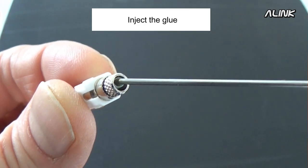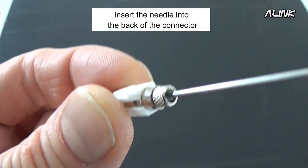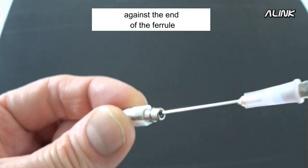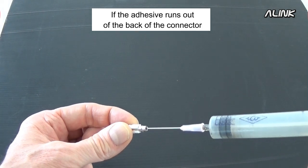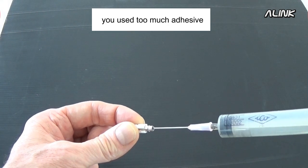Inject the glue. Insert the needle into the back of the connector against the end of the ferrule and squeeze gently. If adhesive runs out the back of the connector, you used too much adhesive.